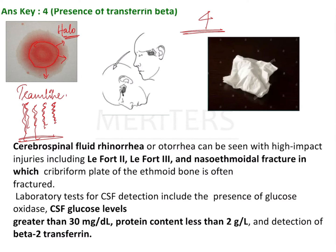The third is the reservoir sign. You ask the patient first to look straight and then to tilt their head downwards. On doing so, you will see leakage of CSF coming out through the nose. This is called the reservoir sign.